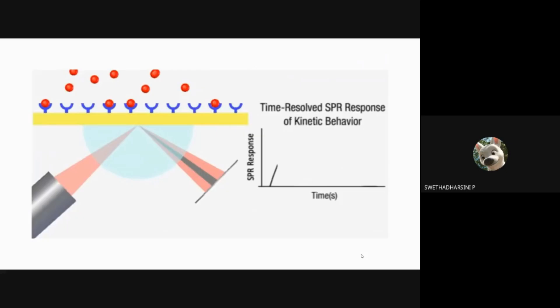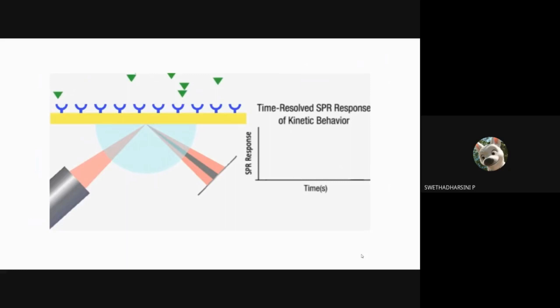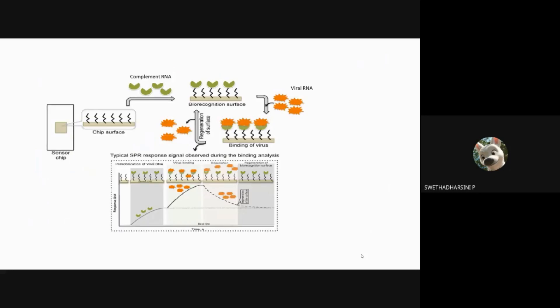If a patient is positive, the viral RNA will bind to the complementary RNA present in the chip so there will be detection in the SPR. If a non-complementary strand comes in contact with the chip, there is no binding so there will be no response. Therefore, this can effectively detect coronavirus.